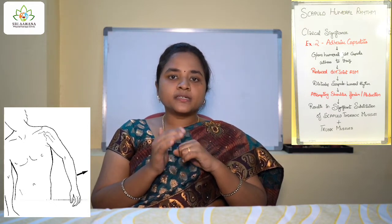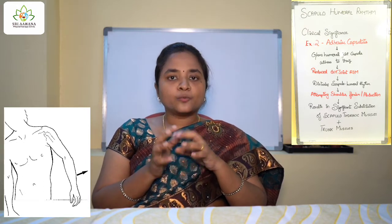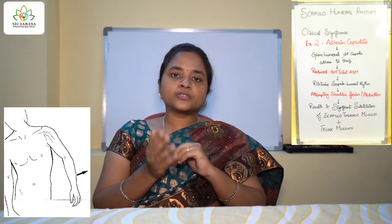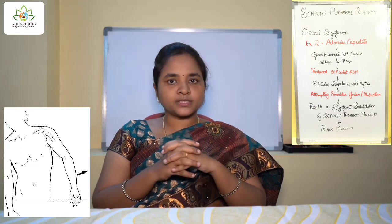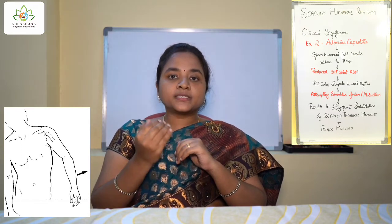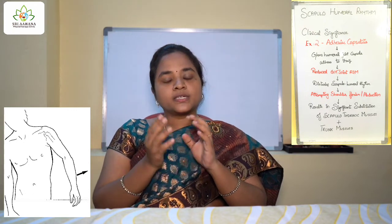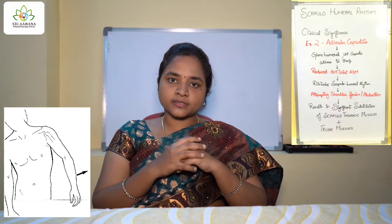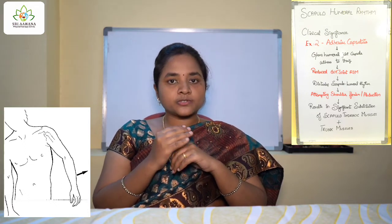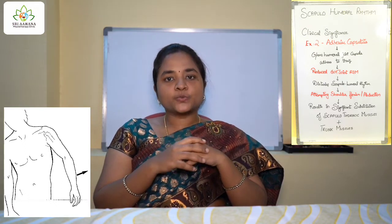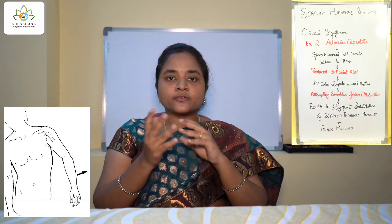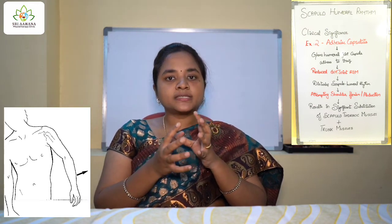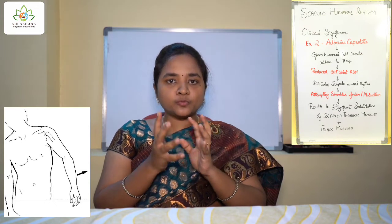Whenever you attempt shoulder joint abduction or flexion movements, there will be significant substitution of the muscles present around the scapulothoracic area as well as your trunk muscles. As you can see in the picture, when you ask a patient with adhesive capsulitis to lift their arm into flexion or abduction, you can clearly observe the compensatory movements. These are the examples where scapulohumeral rhythm gets disturbed.